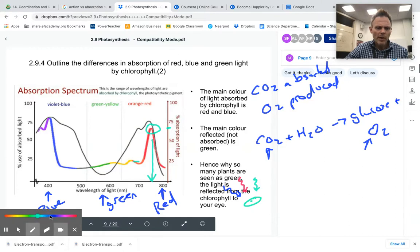Actually, no, let's wait till we do the draw and label. So that's the difference between action and absorption. Action is the photosynthesis happening, which is this black line. Absorption is the specific absorption of the different wavelengths of light.